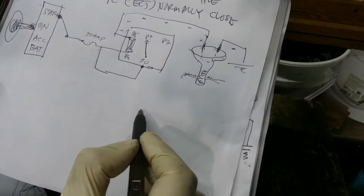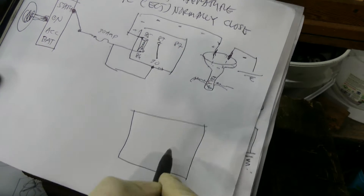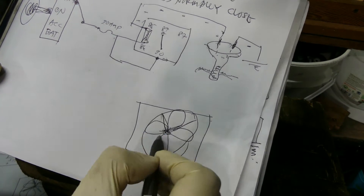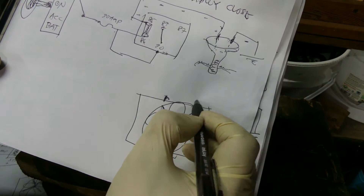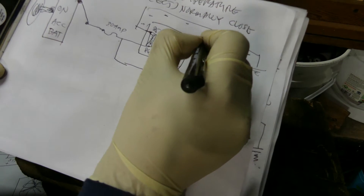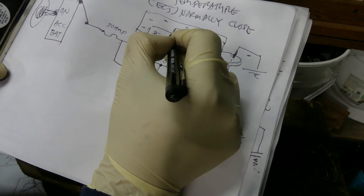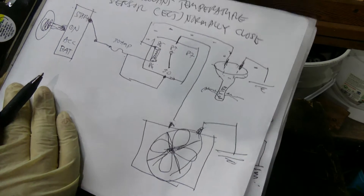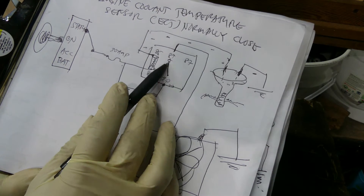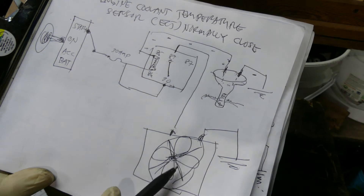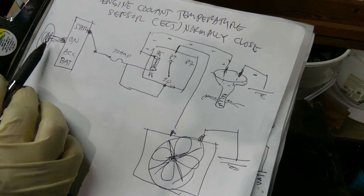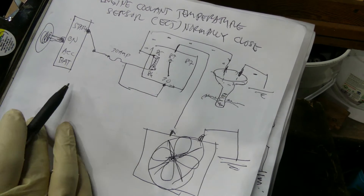We will also draw the radiator fan — it has two connections. One goes to body ground and one is connected to number 87. When your engine is off, number 30 is normally connected to number 87A, so meaning there is power available at number 87 going to your radiator. But of course your radiator fan will not run because the engine is off.